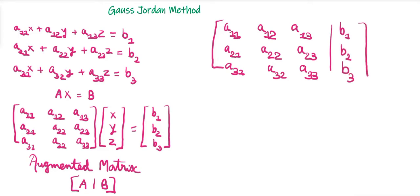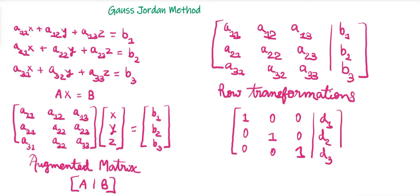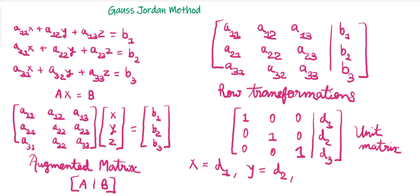Then we will perform some row transformations and reduce this coefficient matrix to a unit matrix. By performing the row transformations, we reduce this matrix to a unit matrix where the diagonal elements will be 1 and the rest of the elements will be 0. Suppose we get the values d1, d2, d3 on the right-hand side. Then from the unit matrix we write the equations: x = d1, y = d2, and z = d3.